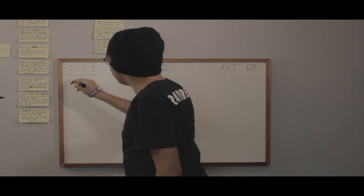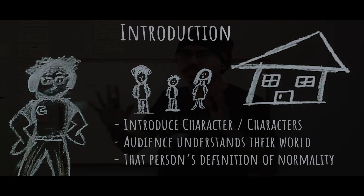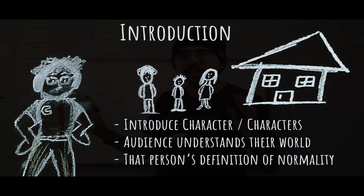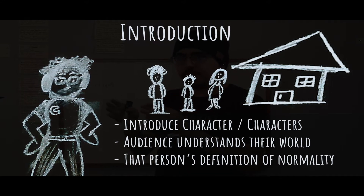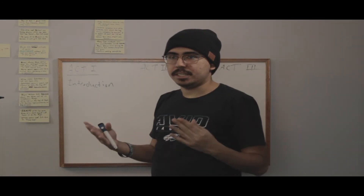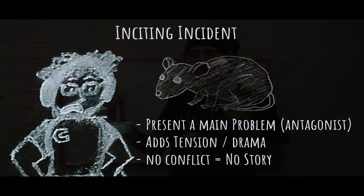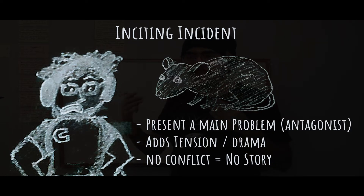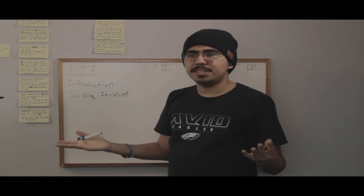Act one always begins with your introduction. You want to introduce your characters, show the environment that they're in, make sure the audience has a good understanding of what this world is, show the characters in their daily lives so the audience understands what their way of normality is. Next up you have your inciting incident — something is going to happen that will disrupt their normal living occurrence. That way you have drama and conflict in your story.